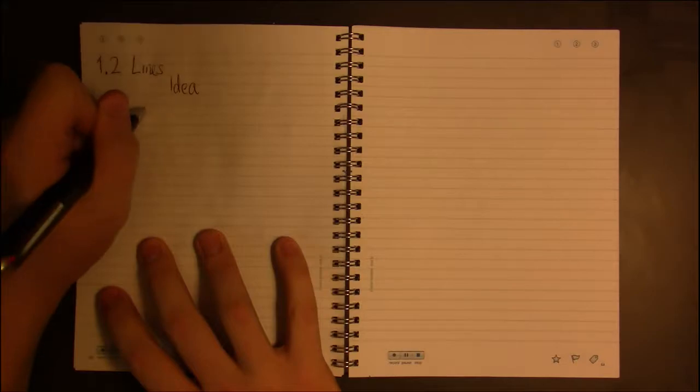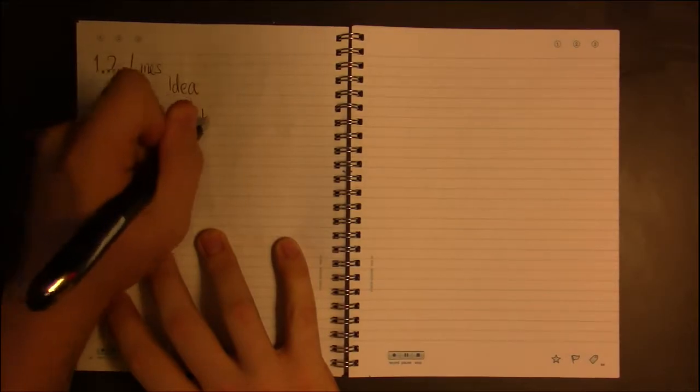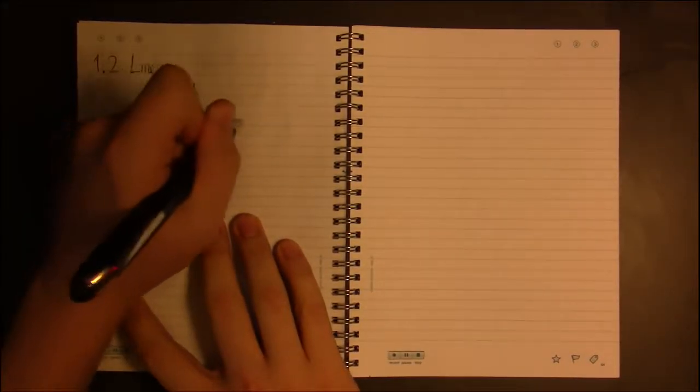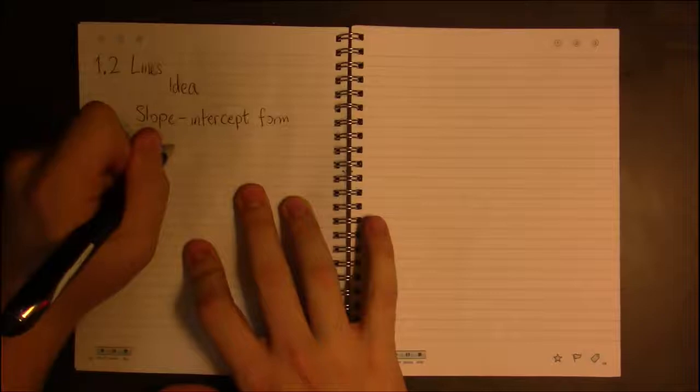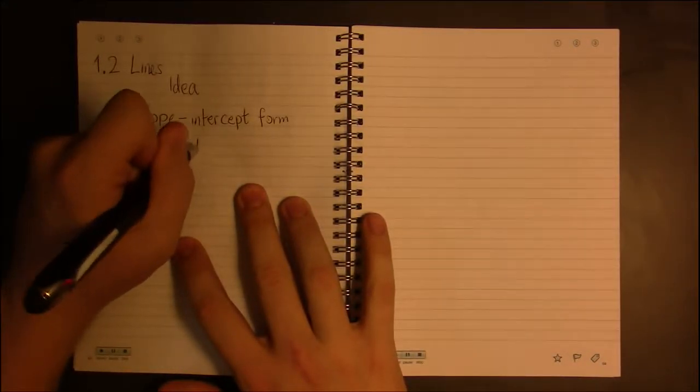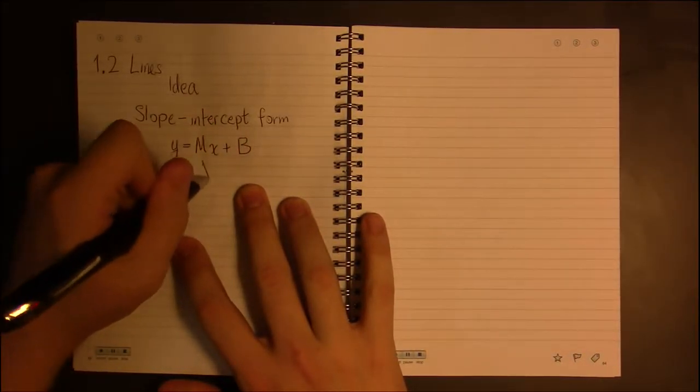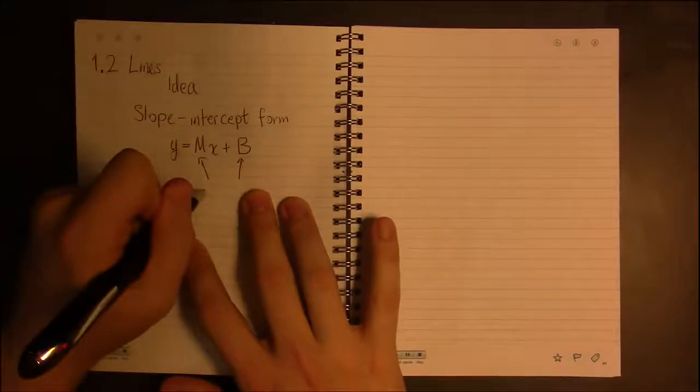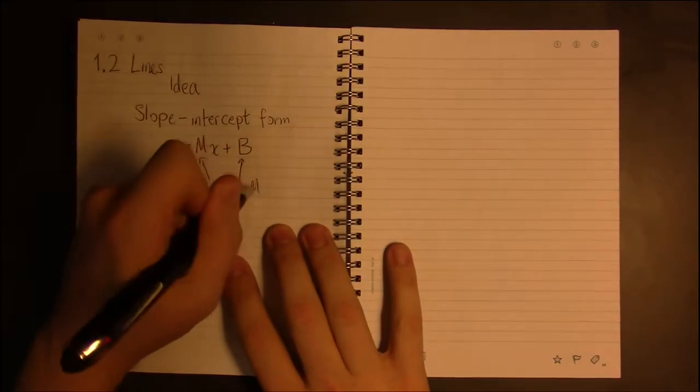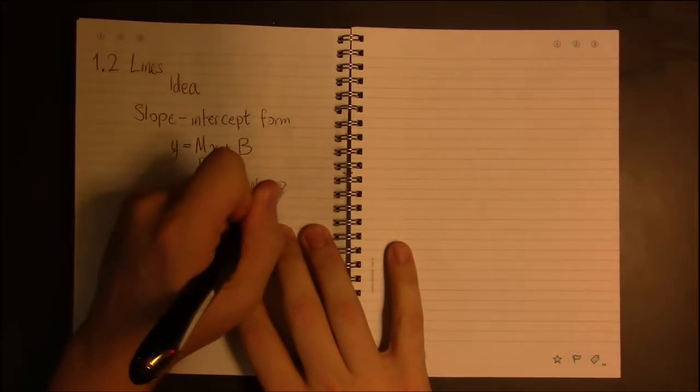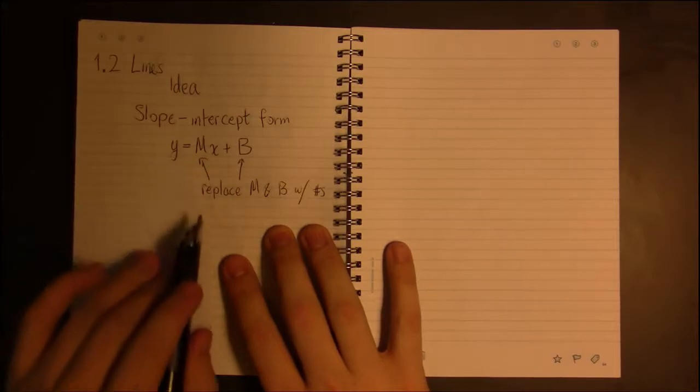Now, hopefully all of you are familiar with what we call the slope-intercept form of a line. That's the y equals mx plus b. And I'm going to stick to my convention of capitalizing letters that are supposed to be numbers. The idea is that we replace m and b with numbers, but you leave y and x alone as variables.